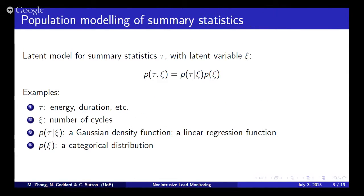How to use this information? We're going to define a probabilistic model for those summary statistics. We use τ to denote the energy, the duration, all those statistics. There's a latent variable τ which depends on ξ. The ξ, for example, is the number of cycles. Given ξ, the distribution of τ is a Gaussian density function or a linear regression function. The ξ, the number of cycles, could be a discrete distribution.